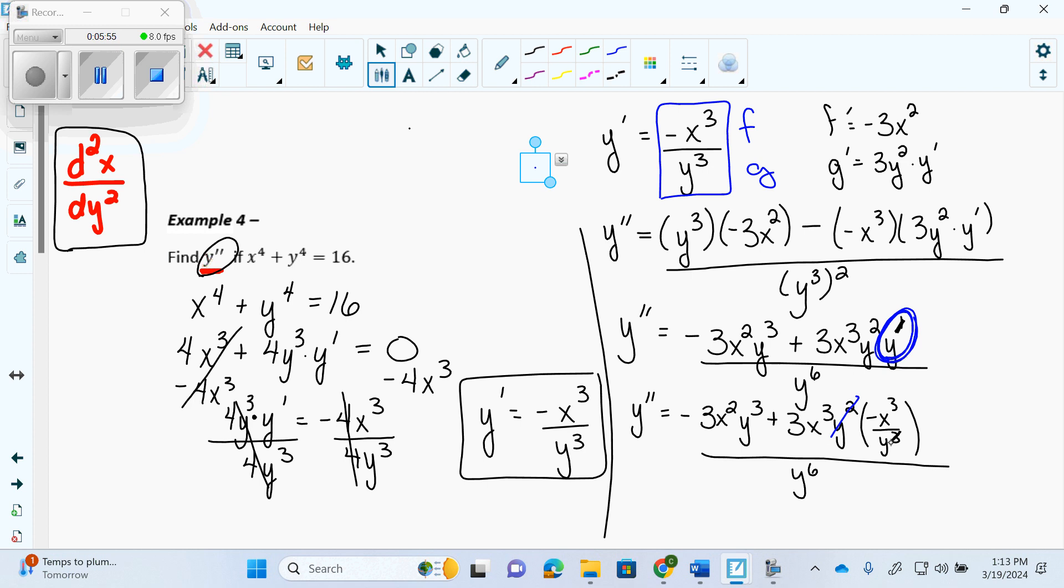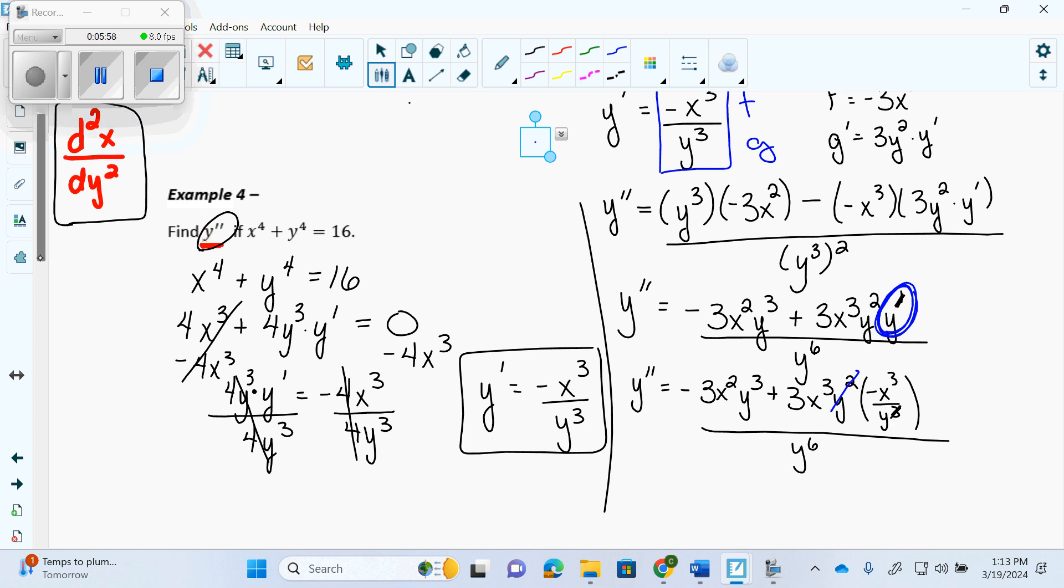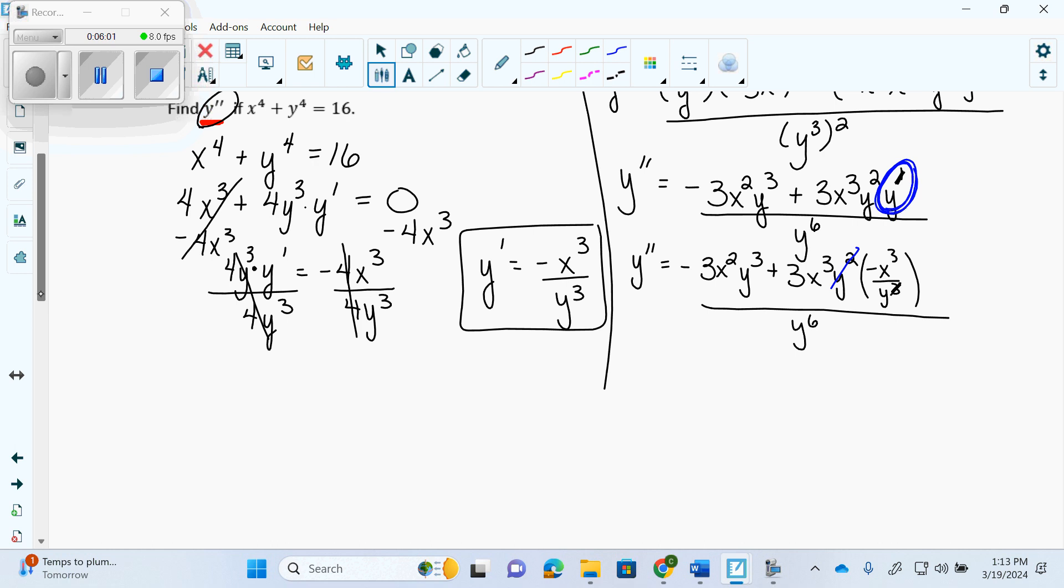That cancels off. So what am I going to get? I'm going to get y double prime equals negative 3x squared y cubed minus 3x to the 6th over y over y to the 6th. Also a really good answer. Won't be there. What do I have in my numerator? It starts with an F. Rhymes with fraction. The F word of mathematics. Fraction. I have a fraction. Am I allowed to have a fraction in the numerator? No. Nada. How do I get rid of a fraction?